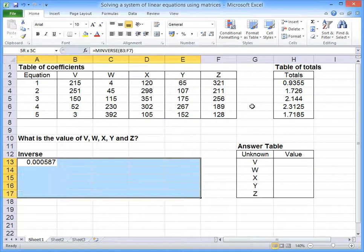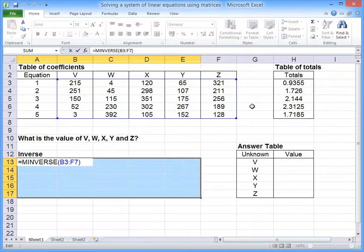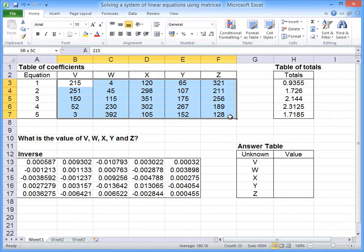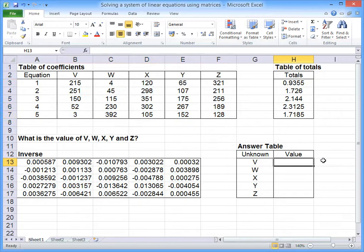Then we have to highlight all the cells that the matrix is going to be read out into, because this is an array function, and we press F2, Control, Shift, and Enter. And that is the inverse of this matrix.